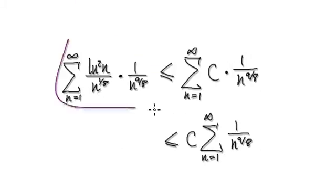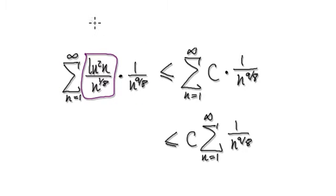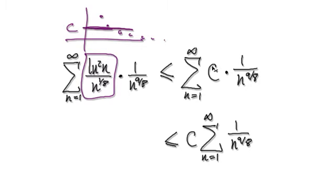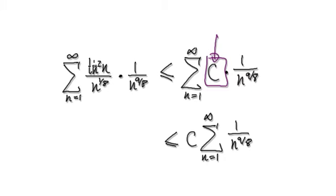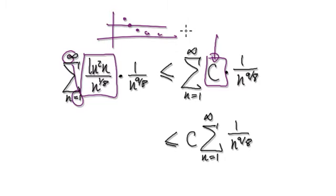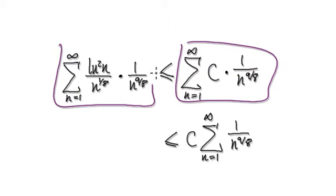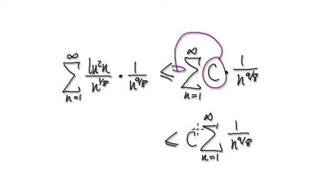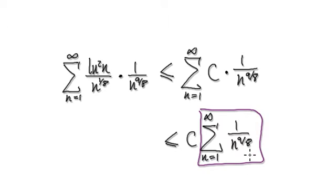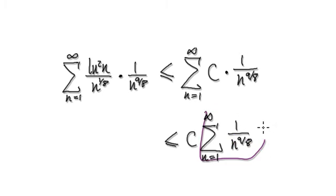We know this expression has a limit of zero, meaning it's heading towards zero. If you're heading towards zero, then you're bounded by a constant c, which means c is always bigger or equal to this expression as n heads towards infinity. So we can say that this expression is bounded, and since this is a p-series where p equals 9 over 8 — which is bigger than 1 — we know this will converge.